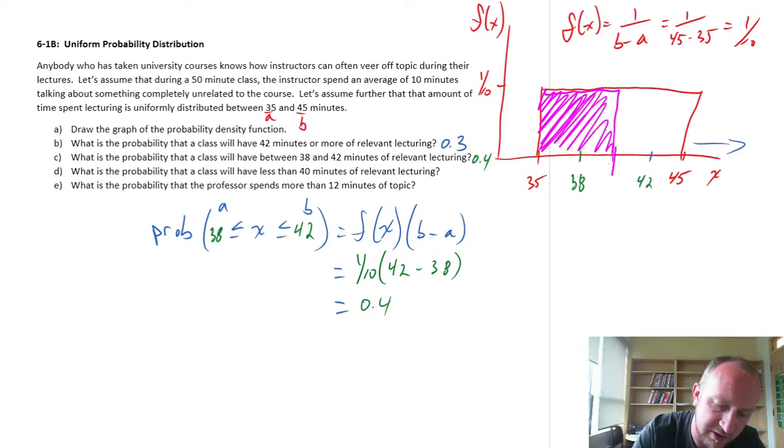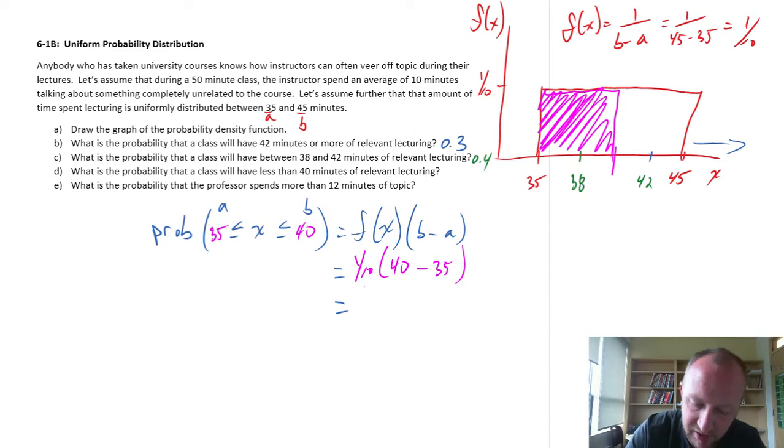So this is between 35 and 40. So this function still has the same value, 1 tenth times 40 minus 35. So that's going to be 1 tenth times 5. That's going to be 0.5. Good.